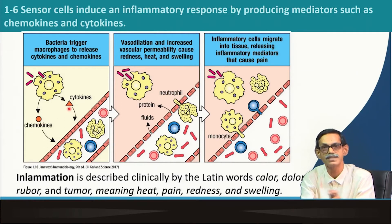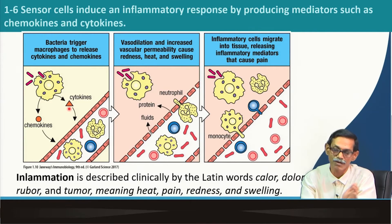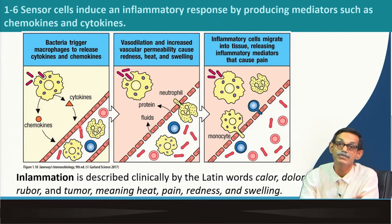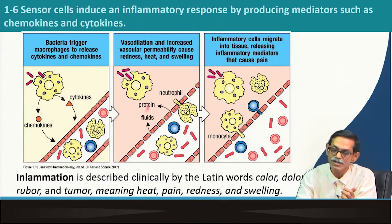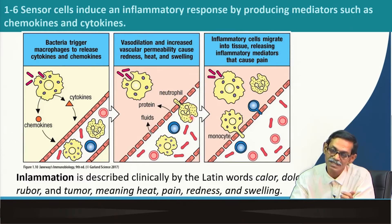These cytokines and chemokines have different roles you will gradually see in future classes. For now, what they do is this: the blood vessels, which are tightly packed so that blood cannot diffuse to the tissue, are vasodilated by the cytokines and chemokines. Vasodilation means the cells are no longer as tightly packed as before, creating gaps. Through these gaps, neutrophils and other cells — attracted by the chemokines — reach the site of infection.